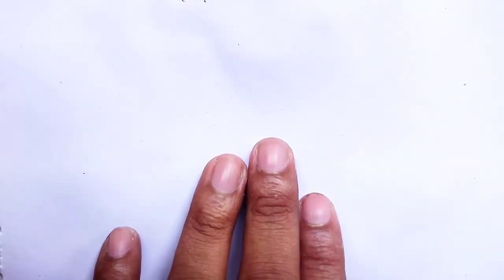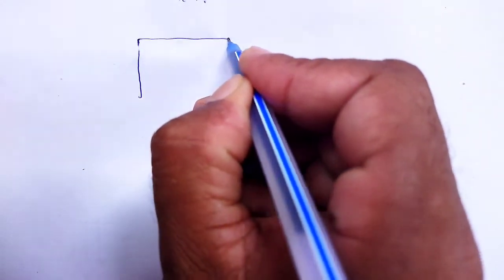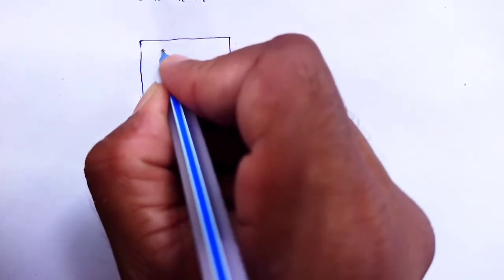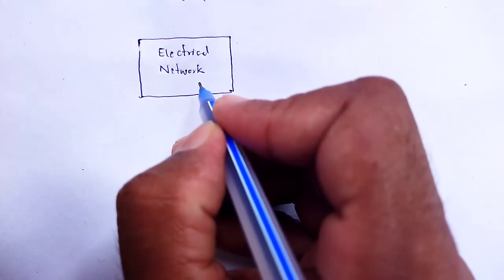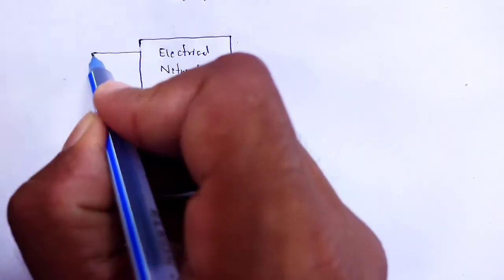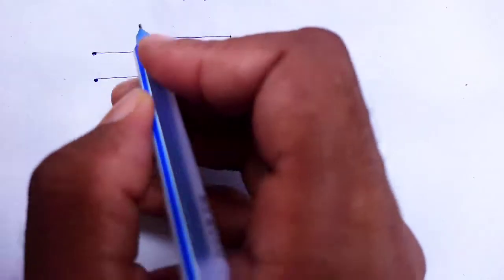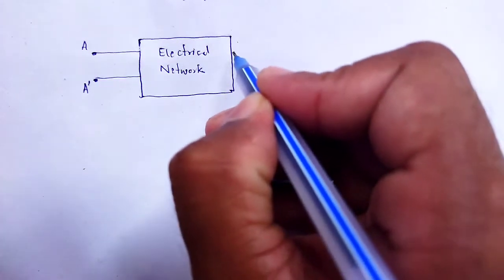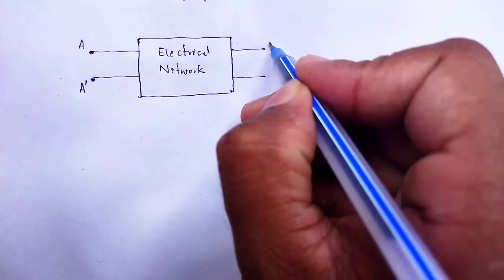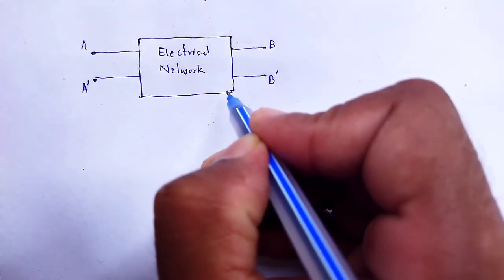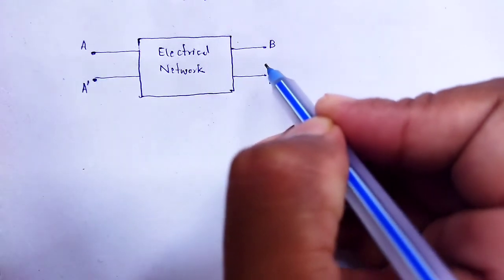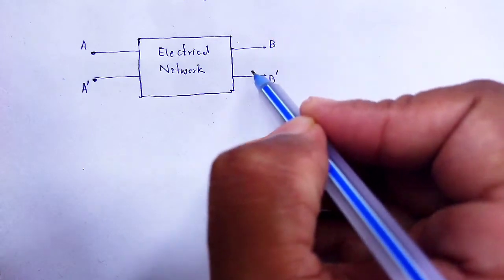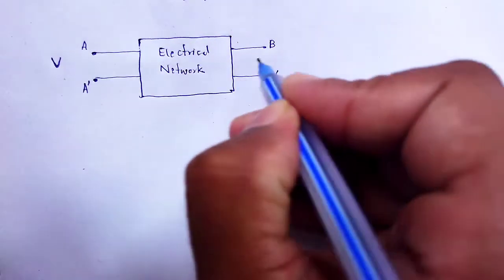Look here, how these things are done. You have to consider an electrical network. Denote the input voltage and output current, input current.